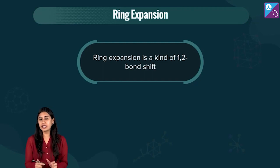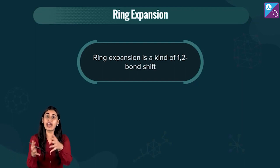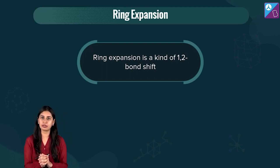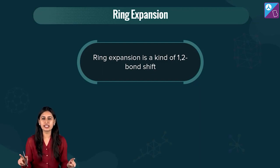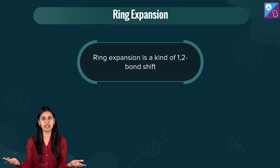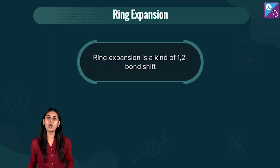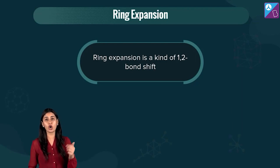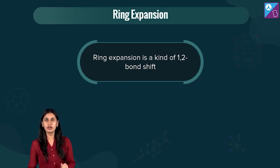Ring strain causes instability. In order to overcome the strain, either ring expansion or ring contraction can happen. We are focused only on ring expansion. If ring contraction gives stability to the molecule, that's also possible, but what we are focusing on is ring expansion.